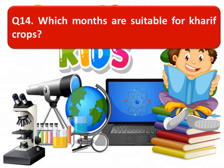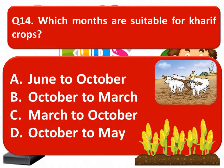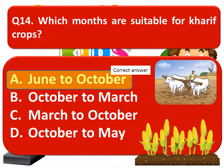The next question is: which months are suitable for kharif crops? Option A: June to October. Option B: October to March. Option C: March to October. Option D: October to May. The correct answer is Option A — June to October.